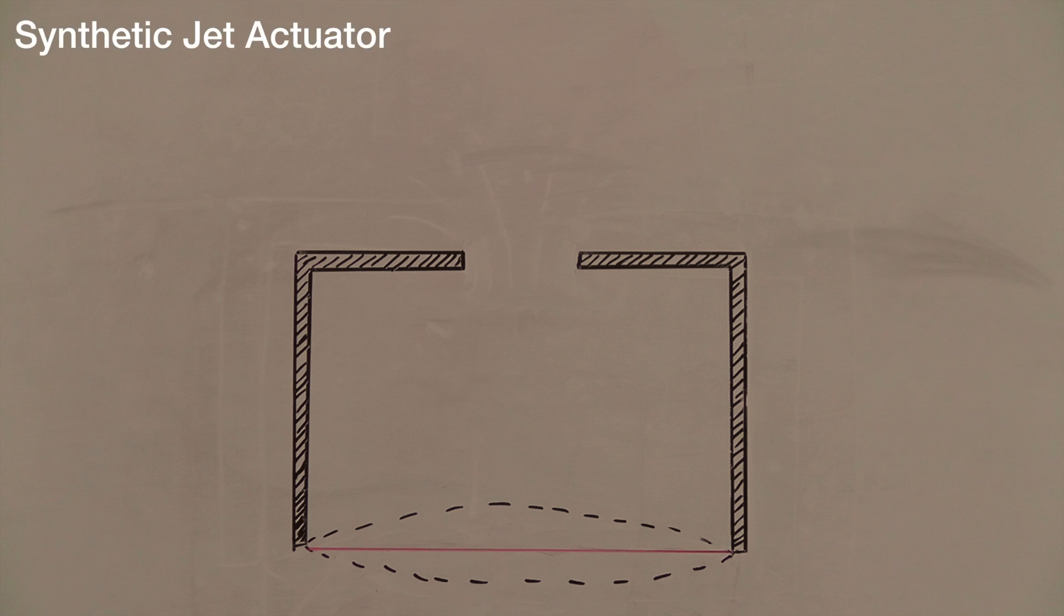My research looks at the use of a device called synthetic jet actuator to reduce drag. A synthetic jet actuator is a device comprised of a chamber with an oscillating diaphragm at one end and a slit at the other.